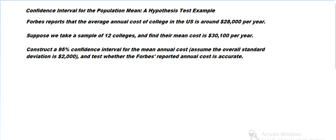Forbes reports the average annual cost of college in the U.S. is around $28,000 per year. Suppose we take a sample of 12 colleges and find their mean cost is $30,100. So let's construct a 95% confidence interval for that mean annual cost.